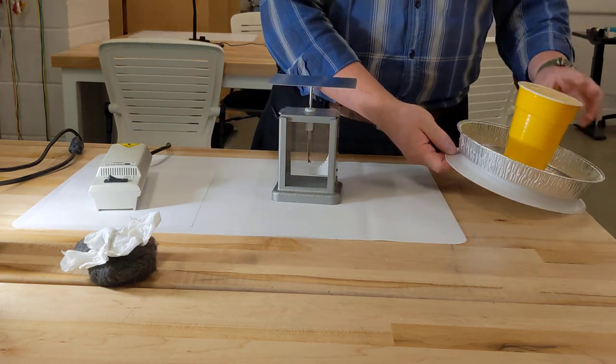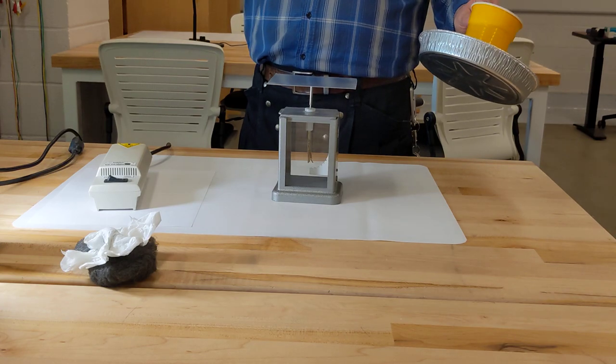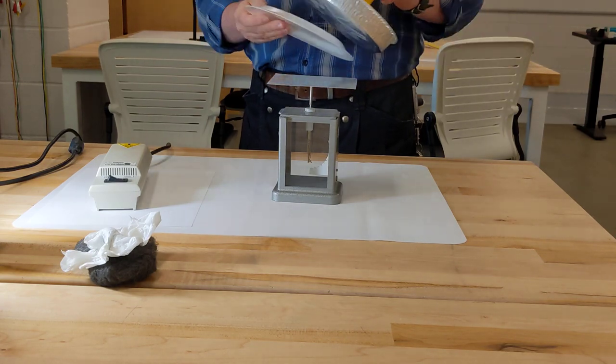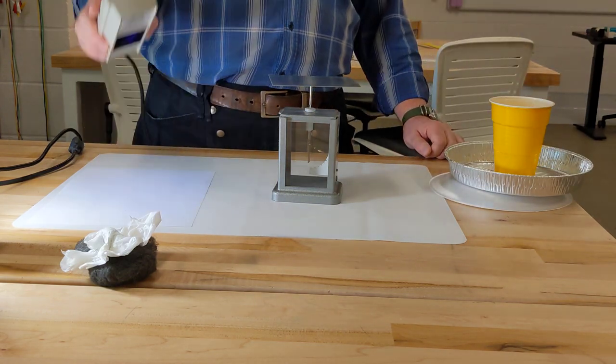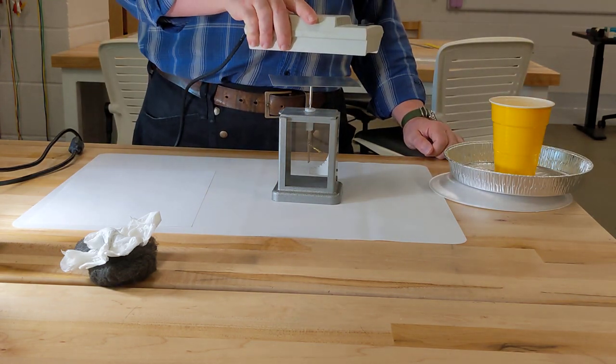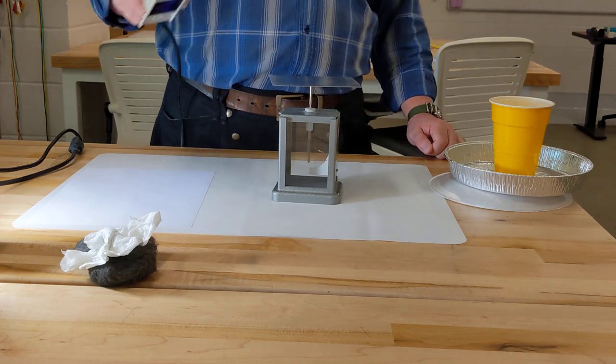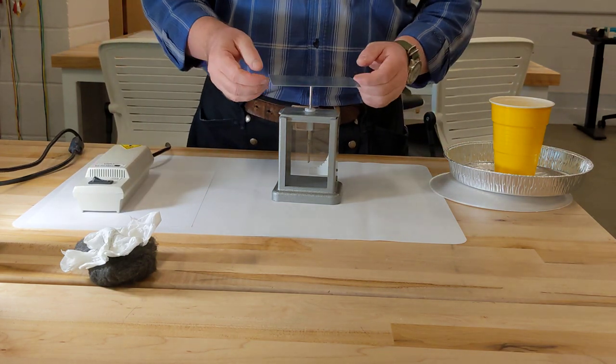Next step, I'm going to place a positive charge on my electroscope. Now when I bring my UV lamp next to it, nothing happens because it's possibly charged.